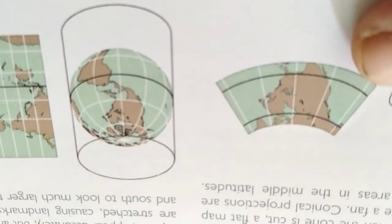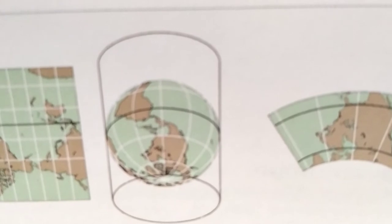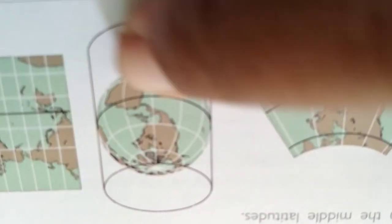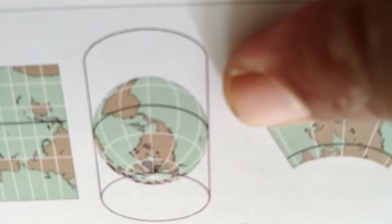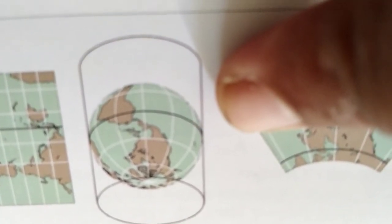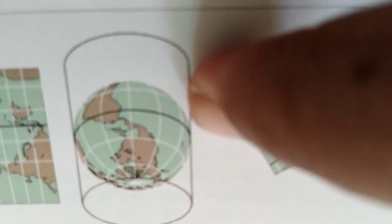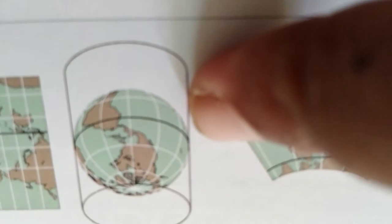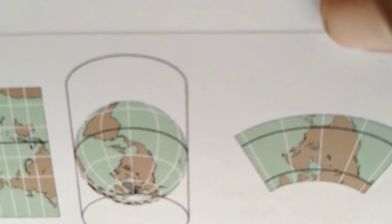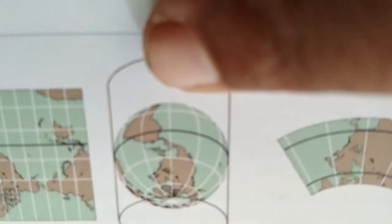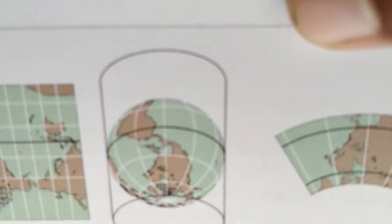Cylindrical projections show the globe as if it were projected onto a large sheet of paper surrounding it, as if the whole world is like a small ball wrapped in a cylindrical bottle. Points around the center near the equator appear accurately, but areas near the poles are stretched, causing landmarks far to the north and south to look much larger than they really are.